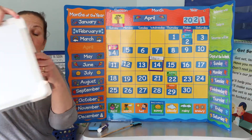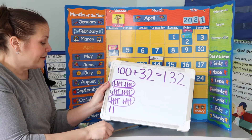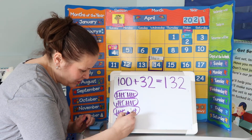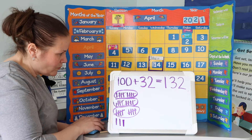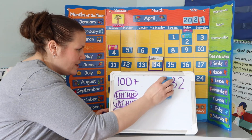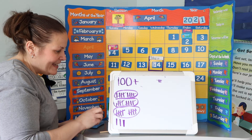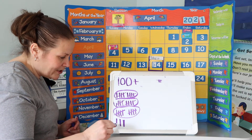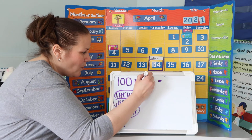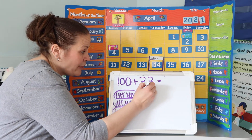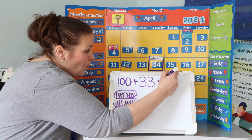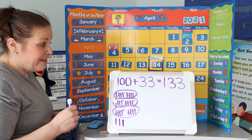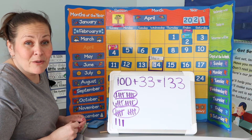Yesterday we were in school 132 days, but today is just one more. So let's add a tally and change our number — just one more. 10, 20, 30, 31, 32, 33. 100 plus 33 equals 133 days of school. And that makes you 133 days smarter.